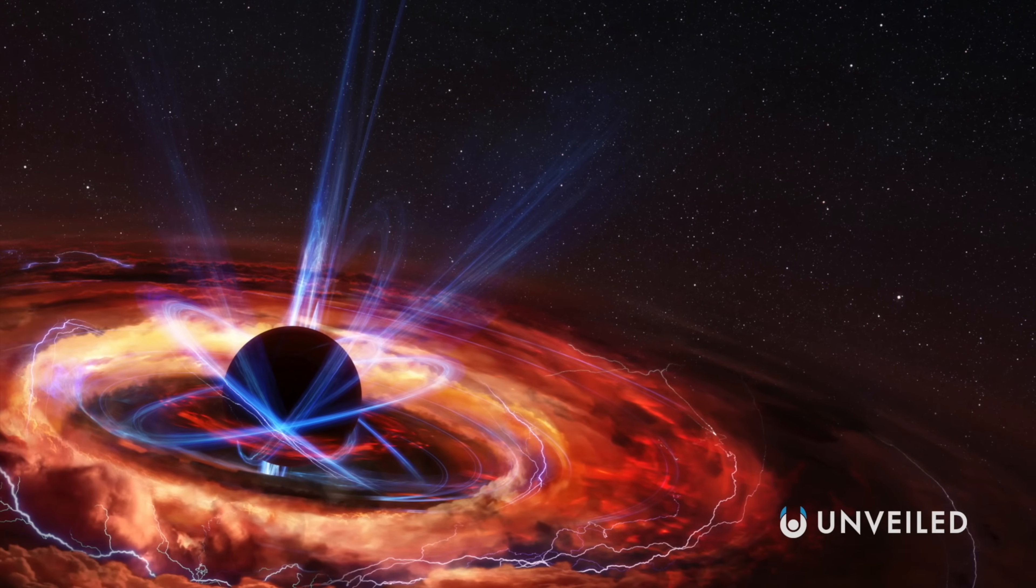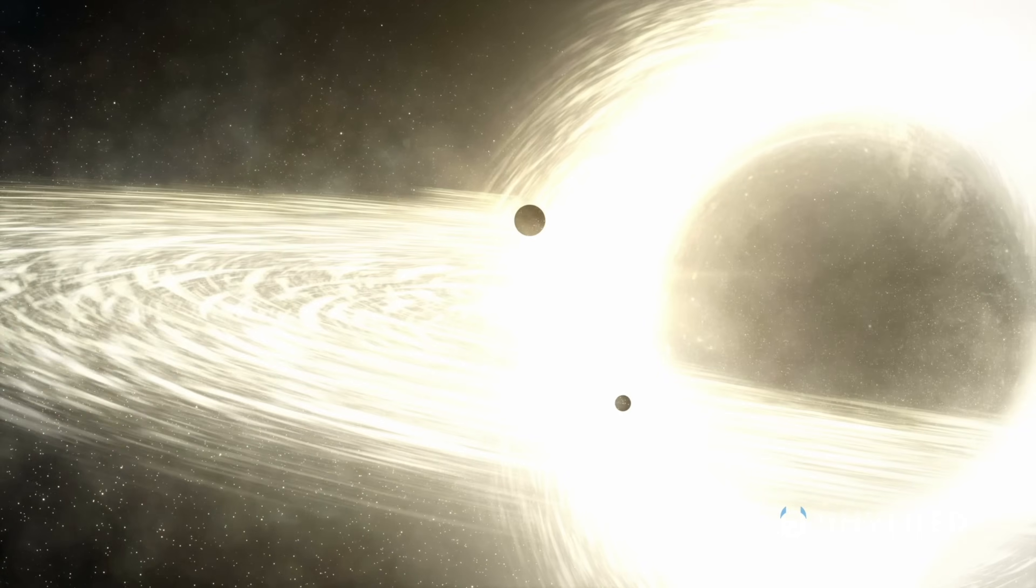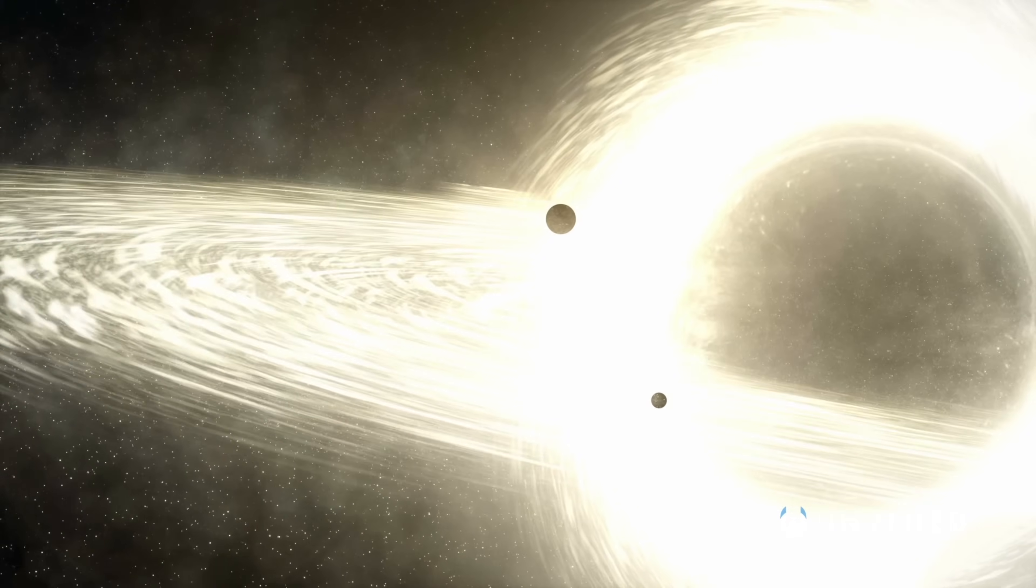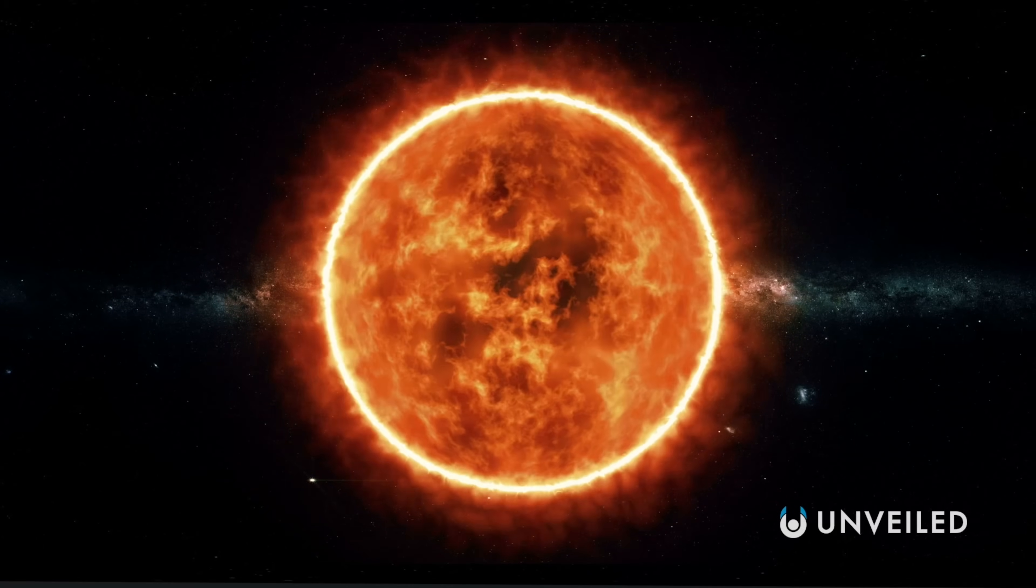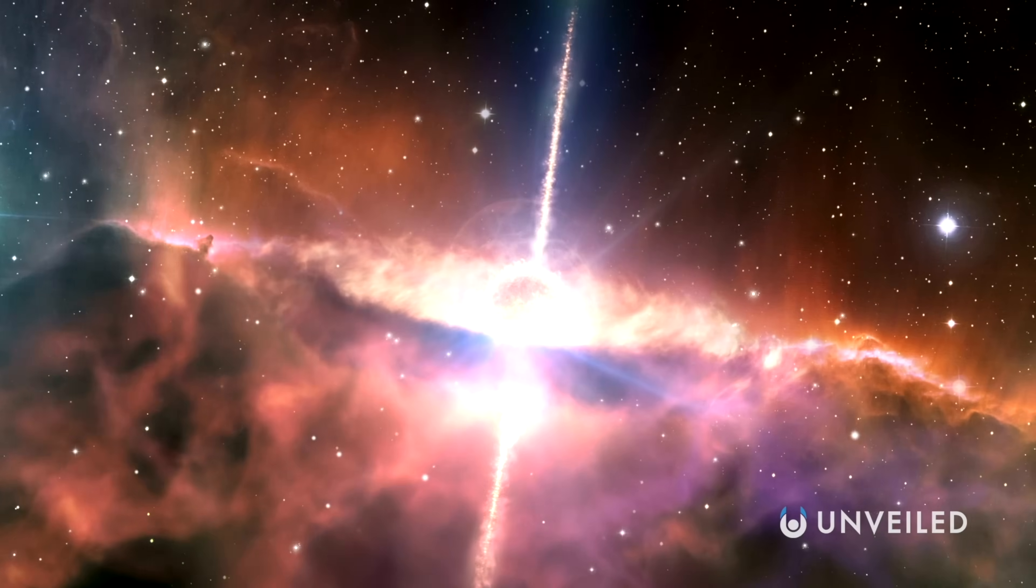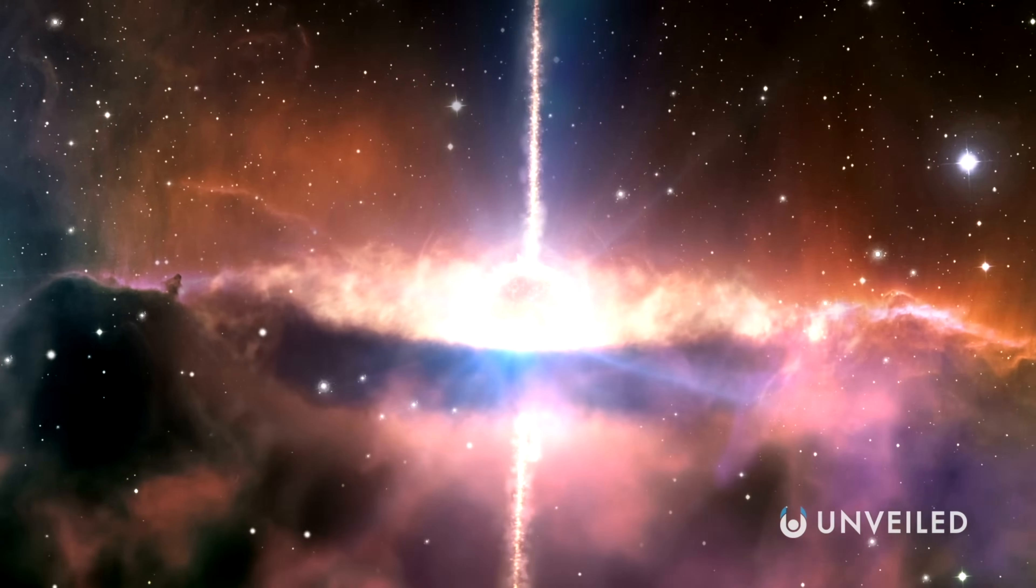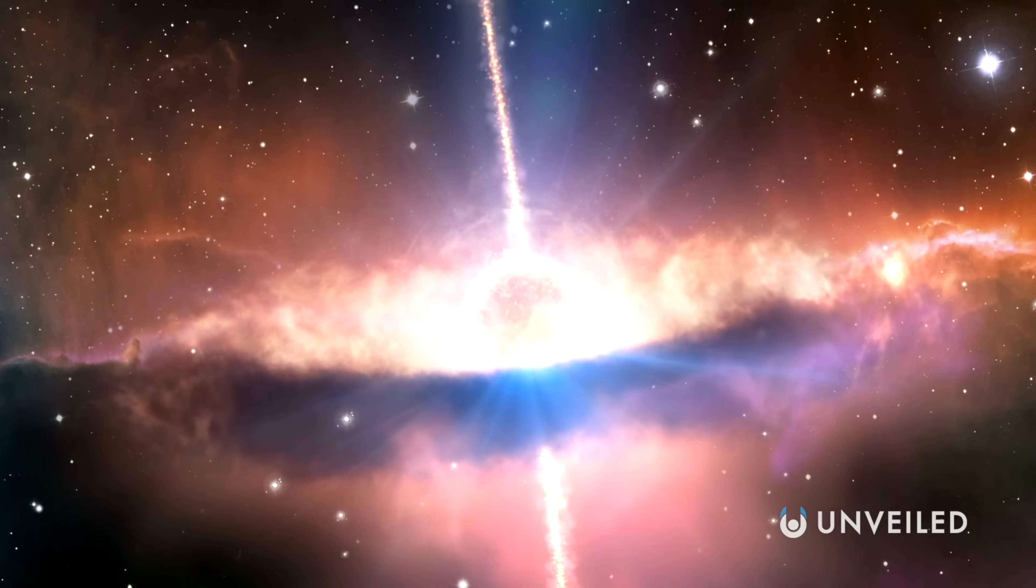Because black holes generally form when a star dies and collapses, they themselves are extremely massive. For an ordinary black hole, you first need a star with a mass at least eight times greater than that of our sun, which is why the sun will never become a black hole itself. Supermassive black holes naturally demand even more mass, while ultra-massive black holes have a mass more than ten billion times that of the sun.